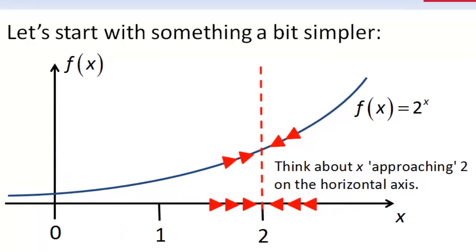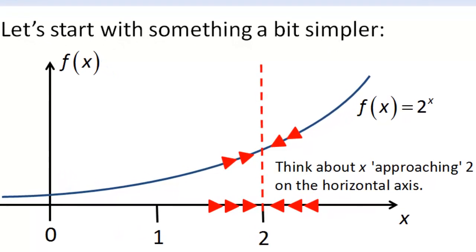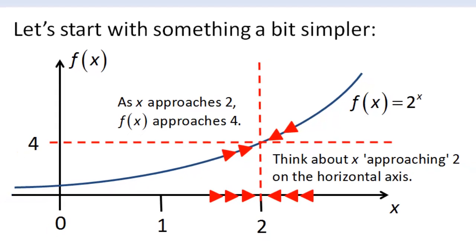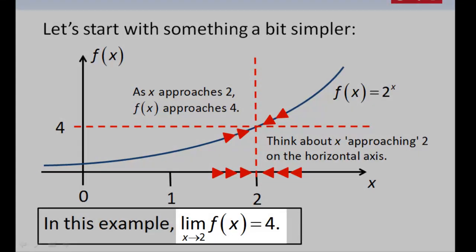So the question is: what happens to the function as x approaches 2? Since our function is 2 to the power x, which is a continuous function with no gaps or jumps, the function approaches a value of 2 to the power 2, which is 4. Because f of x approaches 4 as x approaches 2, we say that the limit as x approaches 2 is equal to 4.